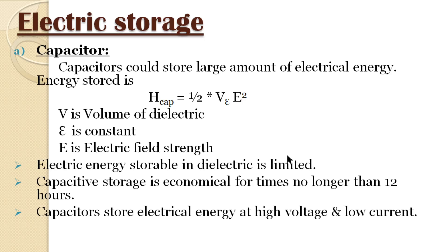A capacitor stores a large amount of electrical energy. The energy stored in a capacitor is given by: H_cap = ½ × V × ε × E², where V is the volume of dielectric, ε is the permittivity constant, and E is the electric field strength. Capacitor storage is not suitable for longer than 12 hours; batteries can store energy for 5 to 70 hours.